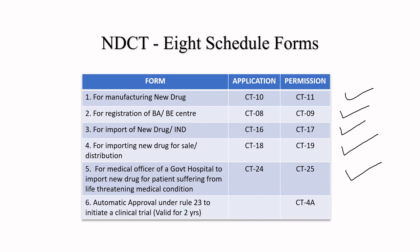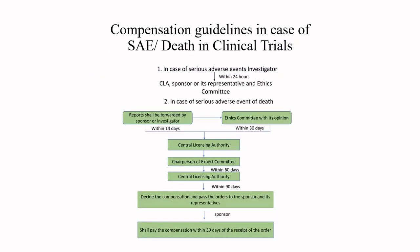Under Rule 23, the permission to conduct or initiate a clinical trial is only valid for two years. If you don't start your trial within that period, you have to get approval again. You should also focus on Form CT4a, which is the automatic approval form. This means that once you submit your application and the authority does not comply within 30 working days, you automatically receive approval via Form CT4a.